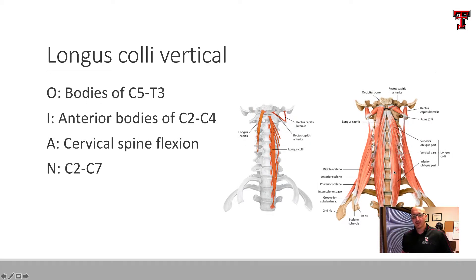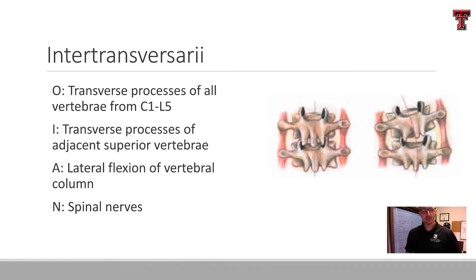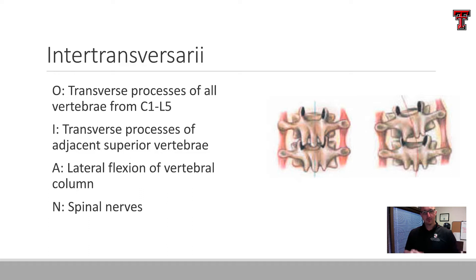Longus colli vertical — the middle portion — originates through the lower cervical and upper thoracic vertebrae and inserts into the vertebral bodies of the upper to middle cervical spine. It's also going to be a flexor, getting its innervation through C2 through C6. That leads us to the intertransversarii — 'inter' meaning between, 'transverse' referring to the transverse process. The intertransversarii run from literally C1 through L5, the entire spine. Those adjacent vertebrae have small muscular connections between each of them. If one side contracts, it's going to lateral flex to that same side, and these small muscles get their innervation through the spinal nerve roots.